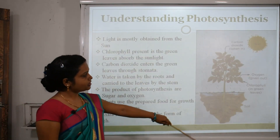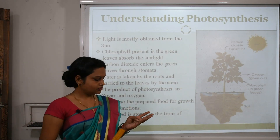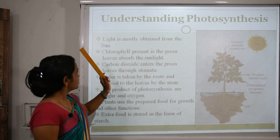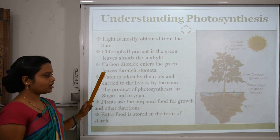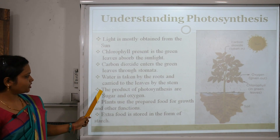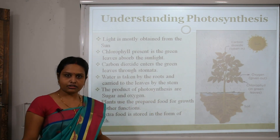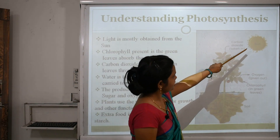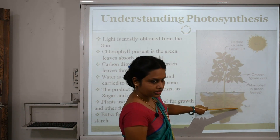With the help of a diagram we can understand photosynthesis. In this process four things are required: water, sunlight, carbon dioxide, and chlorophyll. Light is mostly obtained from the sun. Chlorophyll present in the green leaves absorbs the sunlight. Carbon dioxide enters the leaves through the stomata. Water is taken up by the roots and carried to the leaves by the stem. The products of photosynthesis are sugar and oxygen. Plants use the prepared food for growth and other functions, and extra food is stored in the form of starch.